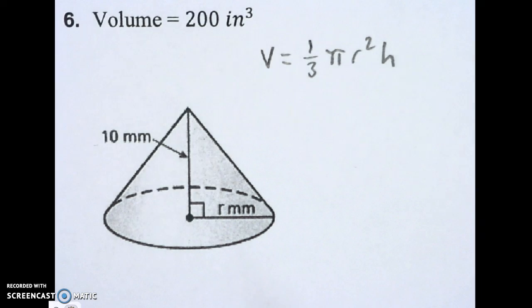All right, we're going to be solving for the missing dimension on this cone here, and we're solving for the radius, so we're going to do some serious math here. Here we go.